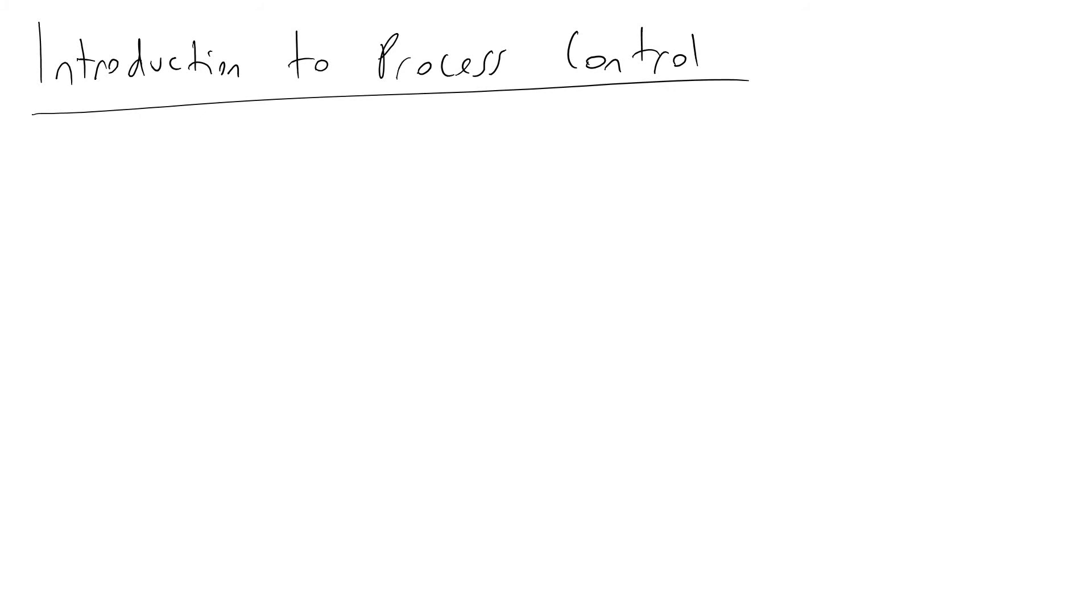Process control is a subject that overlaps all engineering disciplines and its objective is to model and predict systems that we're working with so we can control them. In this video I'll give a basic understanding of the fundamental terms and vocabulary as well as give a CSTR mixer example.